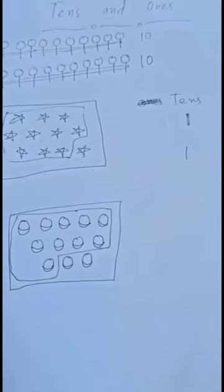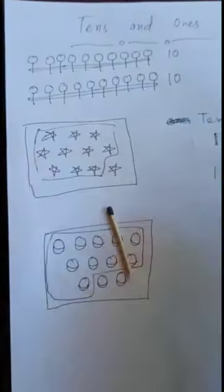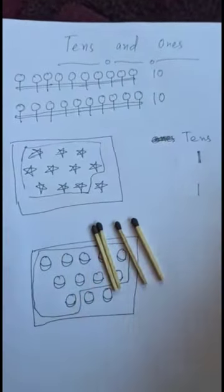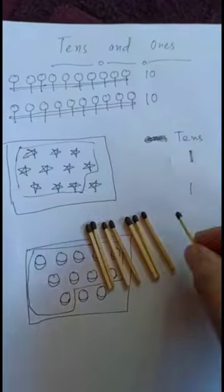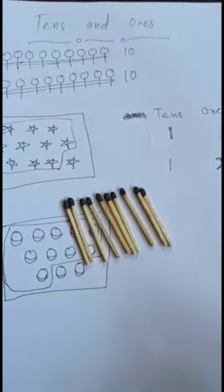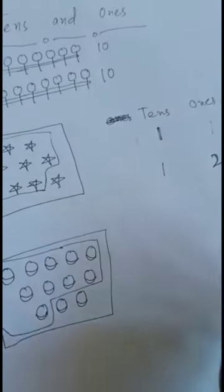One ten and two ones. Now let's count numbers from ten to twenty. One, two, three, four, five, six, seven, eight, nine, ten — kitne se tiks aa gai? Ten. That means one ten. This is a group of ten. In ko jab hum bundle banayenge, one ten — toh yeh banayega one ten.